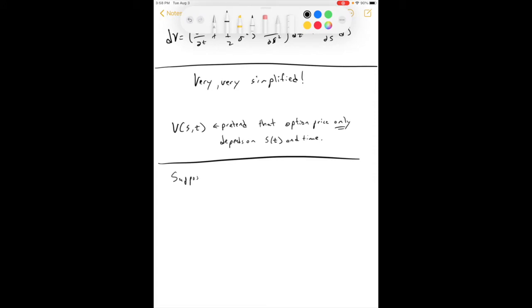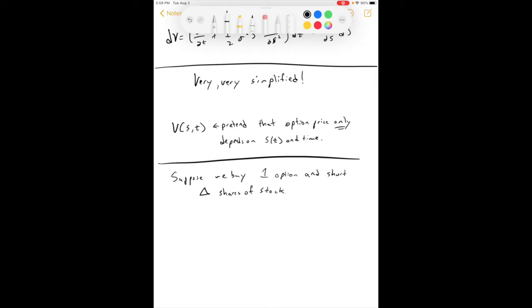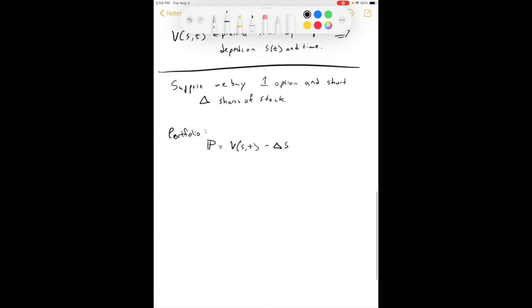Now, suppose we buy one option and we'll short, say, delta shares of stock. Alright, so now we've got a portfolio and the value of our portfolio, big P here, is equal to the value of one option minus delta shares of stock. And it changes like this. The derivative of our portfolio is the derivative of v, whoops, that's supposed to be a minus, not an equals, minus delta ds.